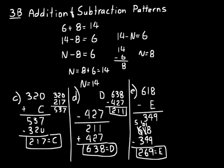When learning a new concept we should always check our work. 618 minus 269: 8 minus 9 — borrow — 18 minus 9 is 9. Make that a 0; 0 minus 6 — borrow — this becomes 5, making a 10; 10 minus 6 is 4. 5 minus 2 is 3. That gives us back 349, our original difference. So 269 is the correct value for E.